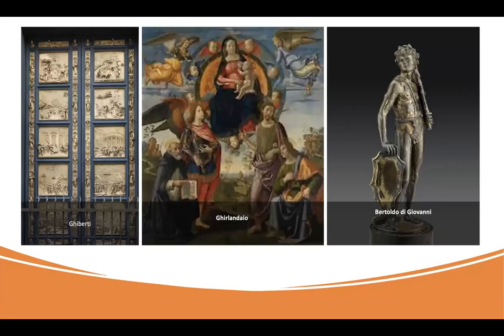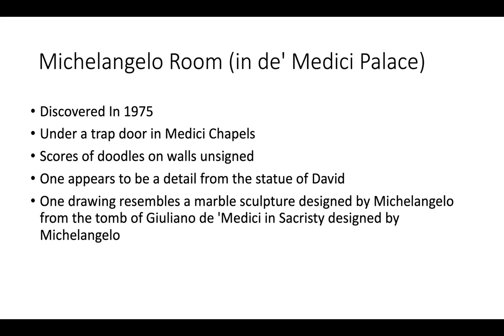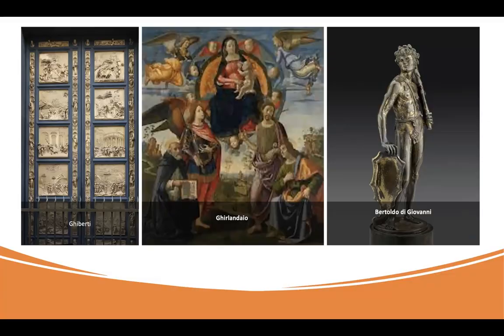The three people who had the most influence on him — under whose tutelage he worked — were Ghiberti, Ghirlandaio in painting, and Bertoldo Giovanni. He was actually complaining that he didn't want to do the Sistine Chapel ceiling because he's not a painter, he's a sculptor. Bertoldo Giovanni had another student who also lived there at the Medici Palace.